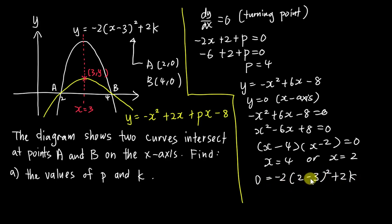So by solving this one, I will get my k value, which is, this is negative 1. Square will be positive 1. So here will be still negative 2. So I move to the other side, become 2 equals 2k. Then my k equals 1.